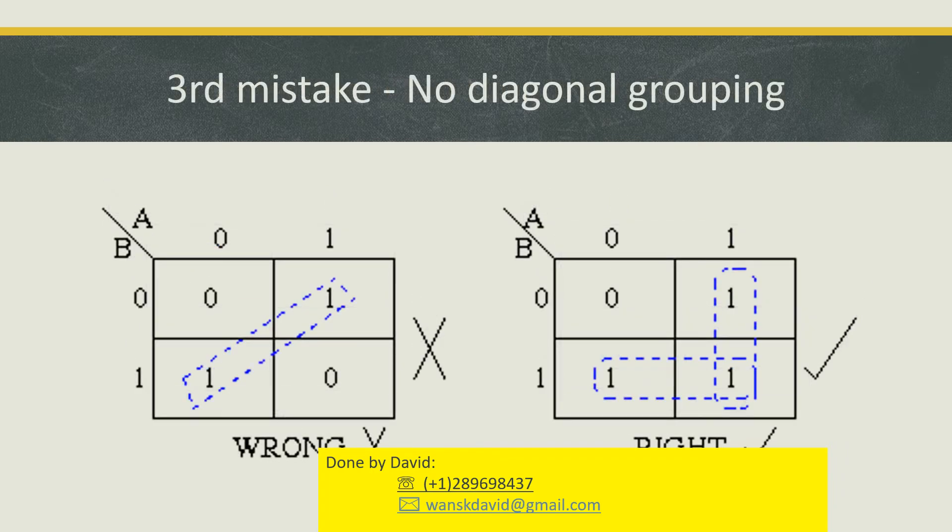Third point: your loops should be formed in a rectangular shape and cannot be placed in diagonal groupings. Follow the one on the right-hand side – do it in a horizontal or vertical way.